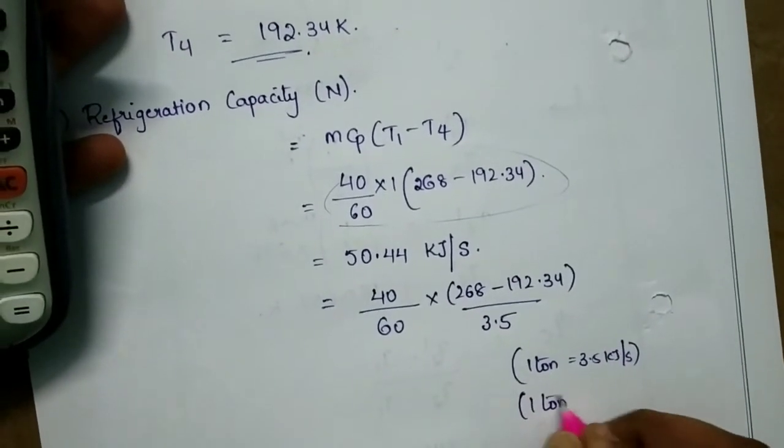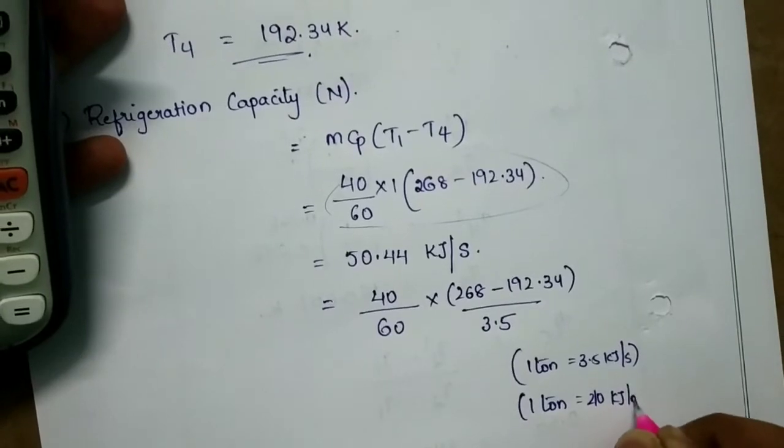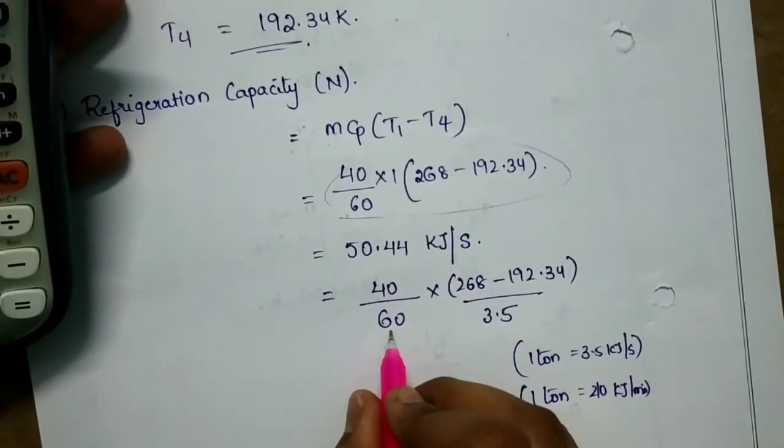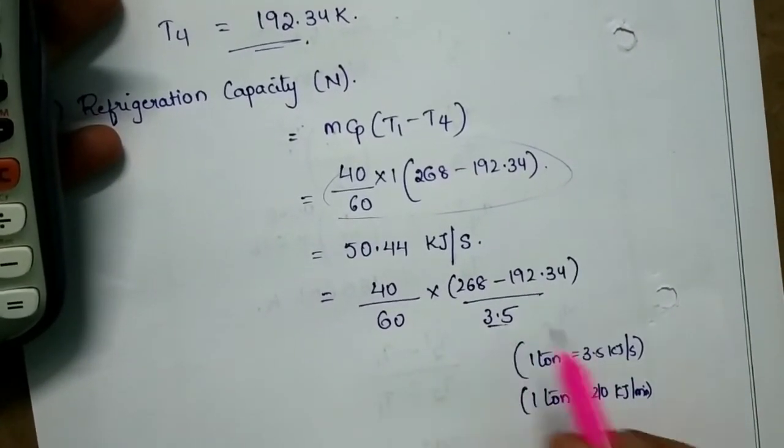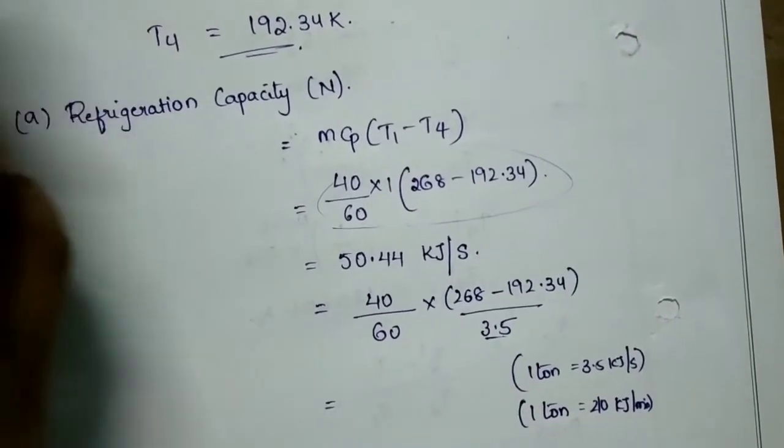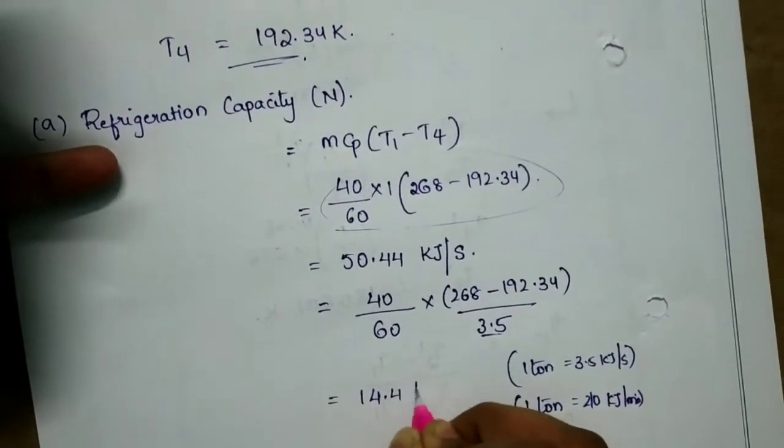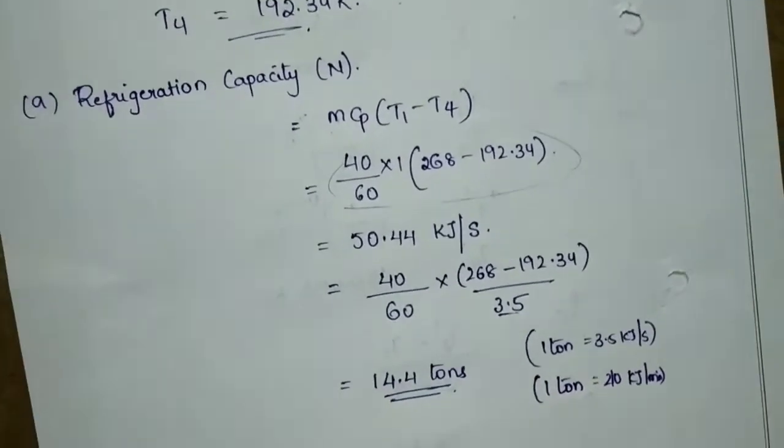1 ton is equal to 210 kJ per minute. Converting to seconds, this equals 14.4 tons, which is the refrigeration capacity.